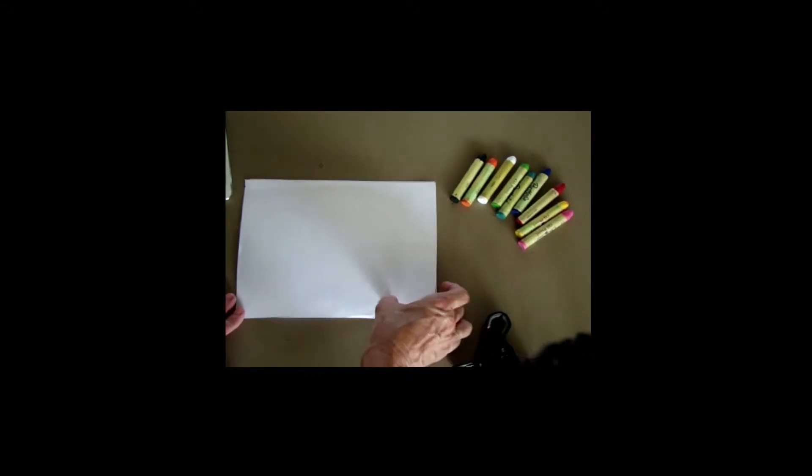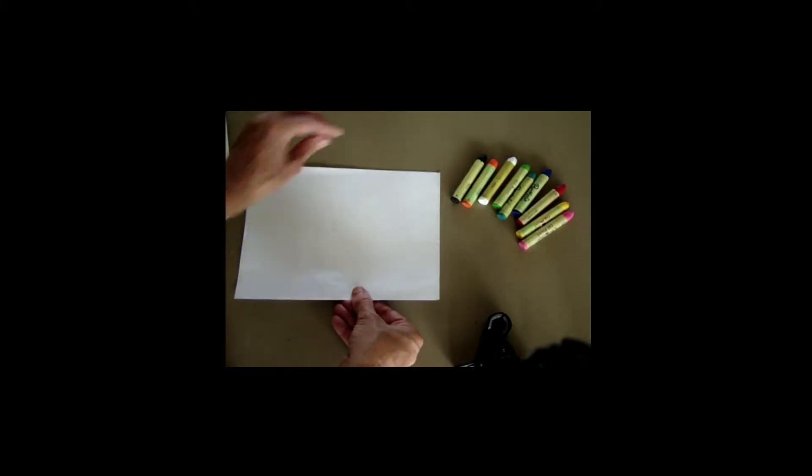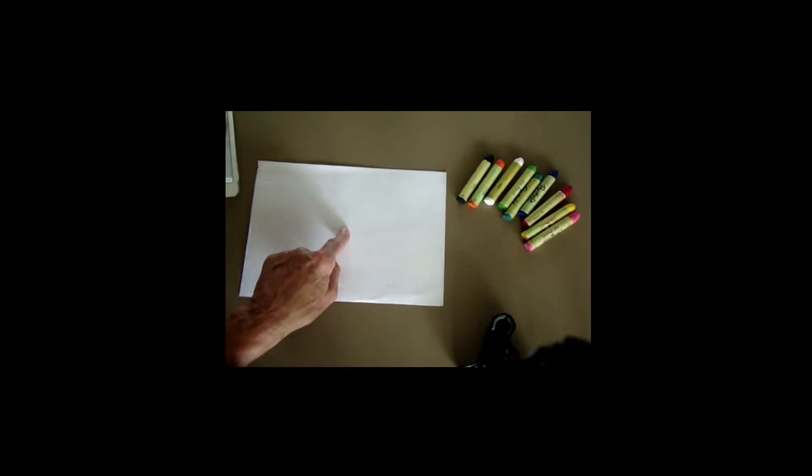To begin our guided drawing of the lion, we want to first make sure that our paper is a laying down rectangle. That's very different from standing up. Turn your paper. Then, we're going to use our finger to find what we think is the center of the paper.